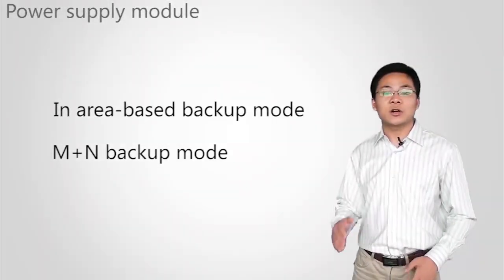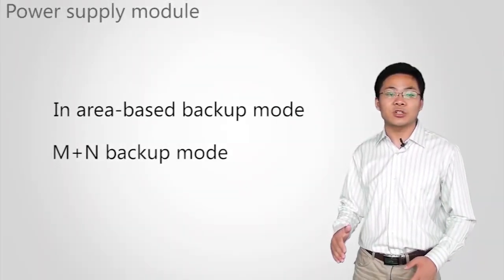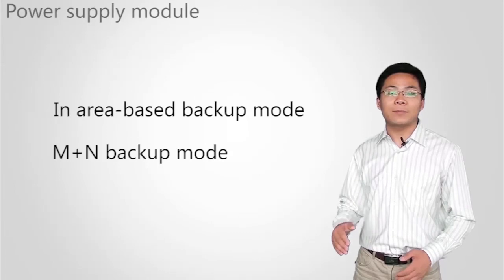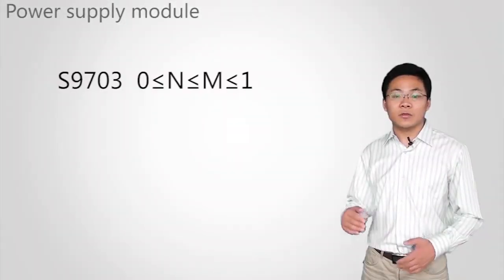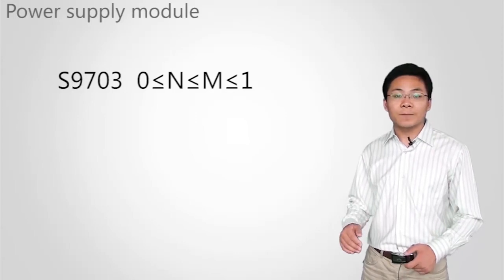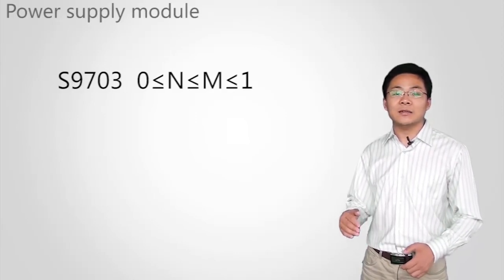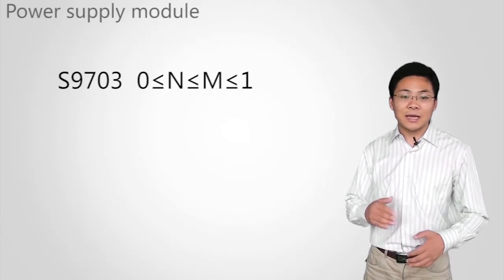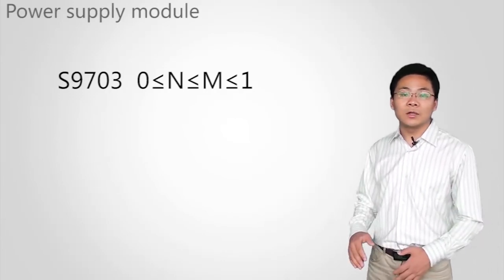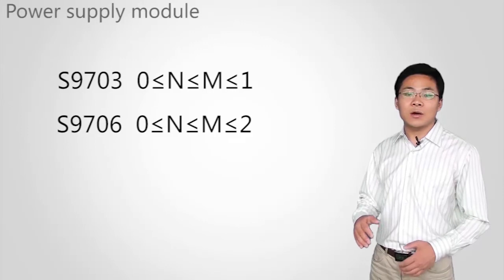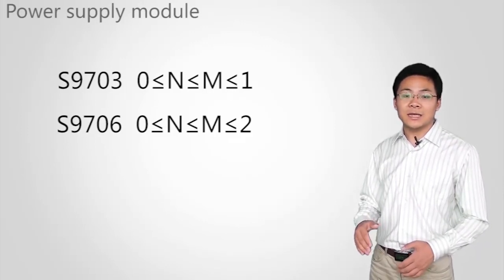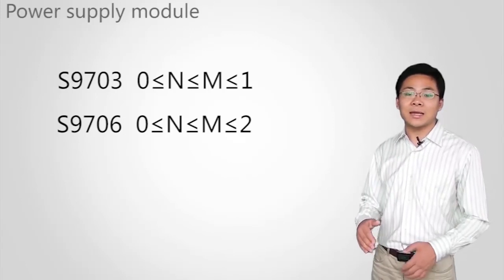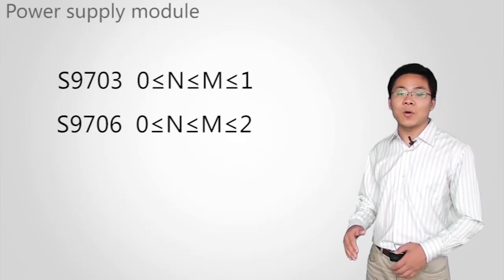The value range for M and N is as follows. For S9703, the value range is N is no less than 0, M is no less than N, and M is no more than 1. For S9706, the value range is N is no less than 0, M is no less than N, and M is no more than 2.